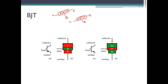A transistor is a three-layer device with three terminals. The terminals of the transistor are collector, emitter, and base. Transistors can be of two types: PNP or NPN.